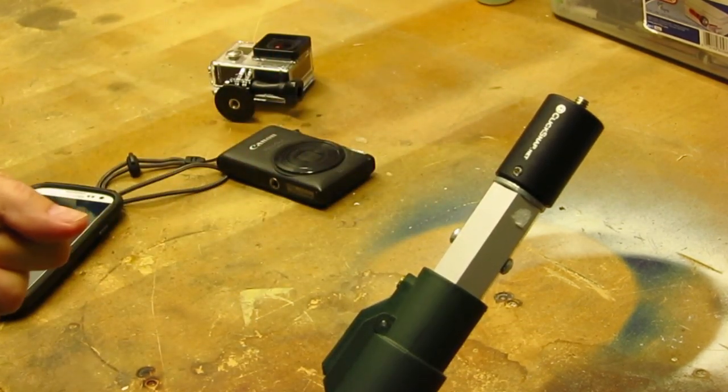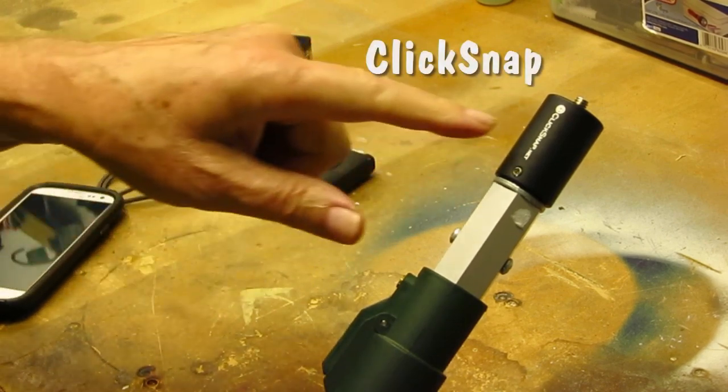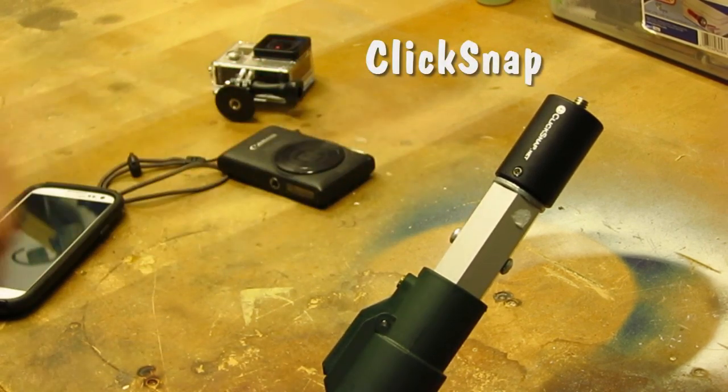This is made out of metal. They do sell some made out of plastic, but I wouldn't recommend them. This is called ClickSnap, and it's from clicksnap.net, or you can get it on Amazon.